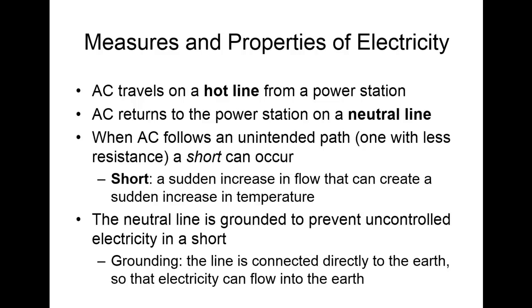AC travels on a hotline from your power station to a building and returns on a neutral line. When the two lines enter an electrical device such as a lamp or hair dryer, the device controls the flow of electricity between the hot and neutral lines. If an easier path is available to electricity, it will follow that path — so never put yourself in a position where you are the path of least resistance between a hotline and a ground, because this can create a short or a sudden increase in flow that could start a fire.